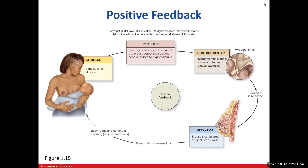Here's the example for positive feedback — you can see the baby suckling on the breast. That's the stimulus. Tactile receptors in the breast around the nipple send information to the hypothalamus, our control center. The hypothalamus then tells our posterior pituitary to release oxytocin, and oxytocin causes the ejection of breast milk. As long as the baby keeps nursing and suckling, this process remains in effect — a great example of positive feedback.